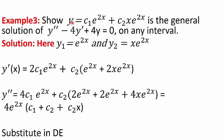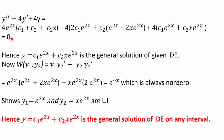In the third example, we are given: show that y = c1·e^(2x) + c2·x·e^(2x) is the general solution of y'' − 4y' + 4y = 0 on any interval. Here y1 = e^(2x) and y2 = x·e^(2x). Differentiating y gives y' = 2c1·e^(2x) + c2·(e^(2x) + 2x·e^(2x)), and y'' = 4e^(2x)(c1 + c2 + c2·x). Substituting y, y', and y'' into the differential equation and simplifying gives 0, confirming y is a general solution.